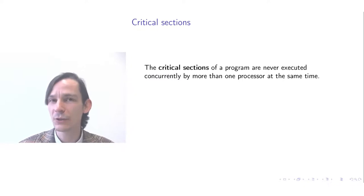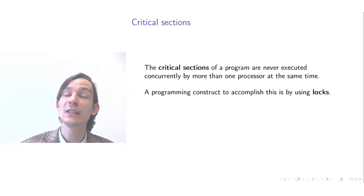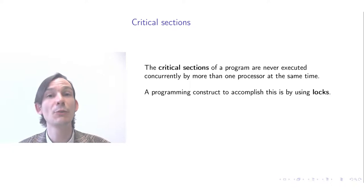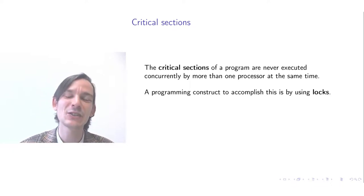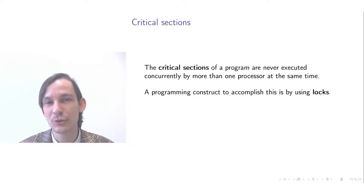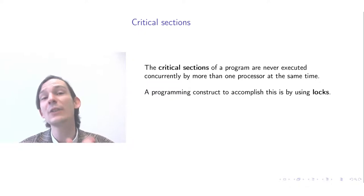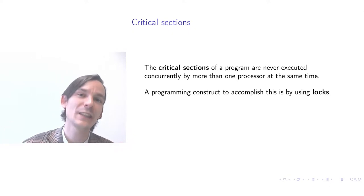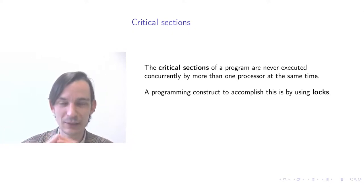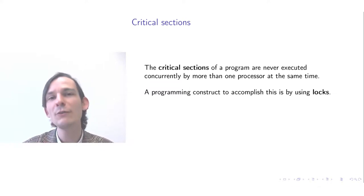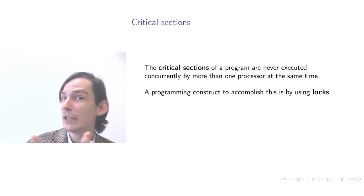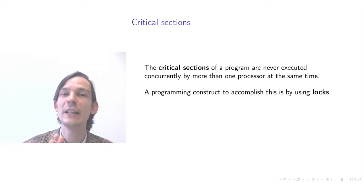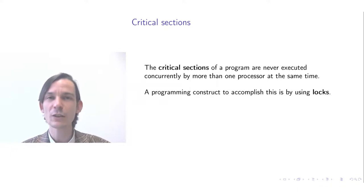To accomplish critical sections, you can make use of a programming construct called a lock. A lock protects a piece of program text such that you can enter only when it is guaranteed that no other process is within that critical section. Moreover, whenever there is still a process in the critical section, it is guaranteed that no other process will enter at the same time. When you want to exit the critical section, you have to explicitly unlock. With these two constructs, lock and unlock, you can implement critical sections in your program.